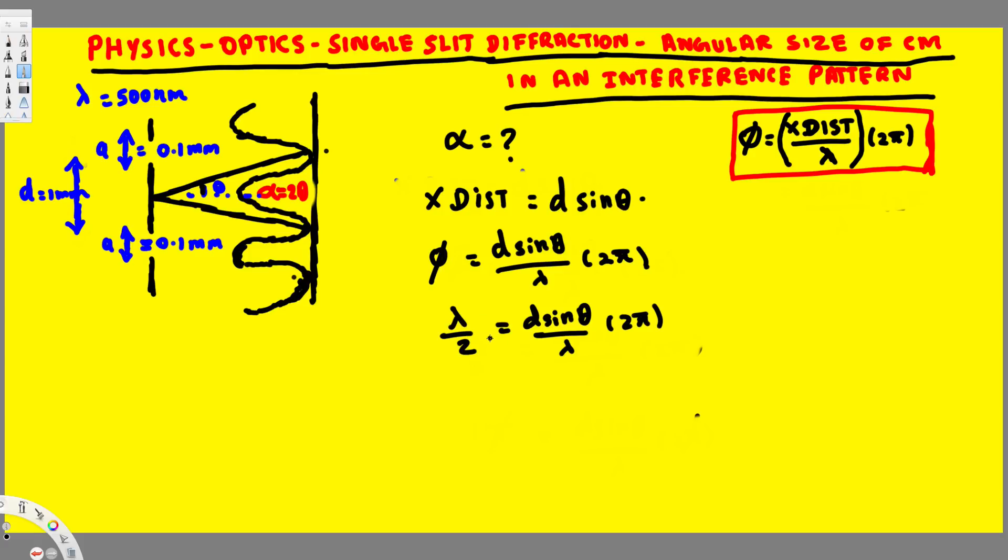And we know that half of a wavelength is going to be pi. So pi, 1 pi is equal to d sine theta over lambda times 2 pi.